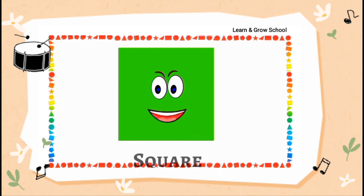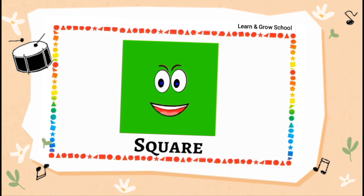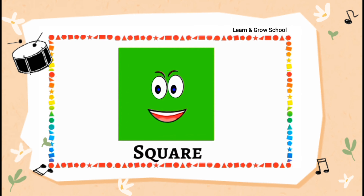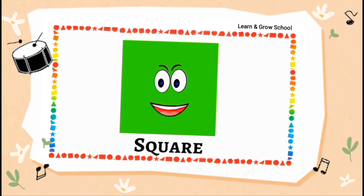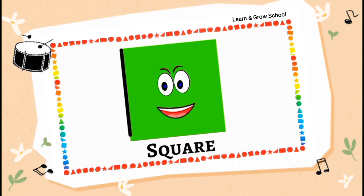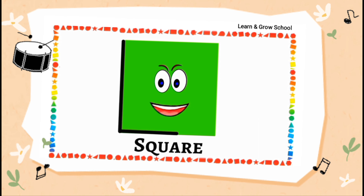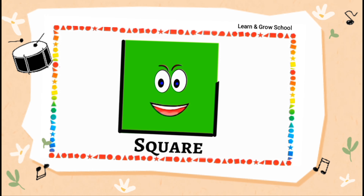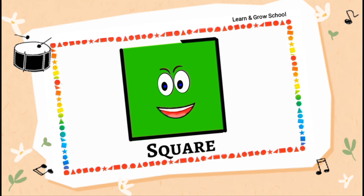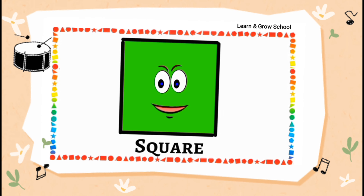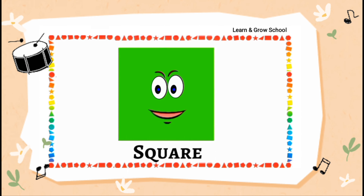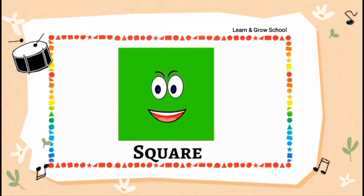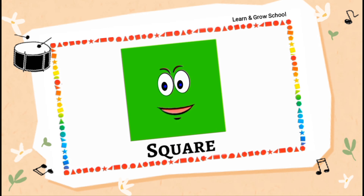Hi, I am a square. I have four equal sides. One, two, three and four. I have four equal sides and four corners too.